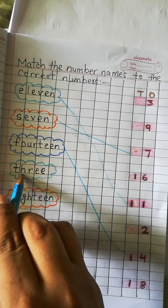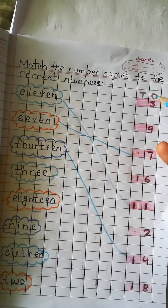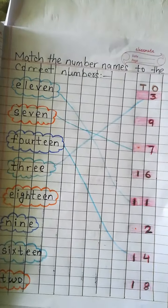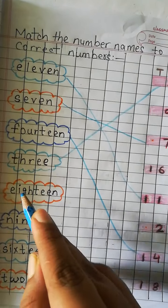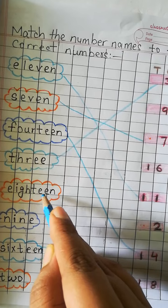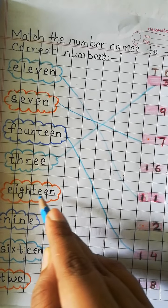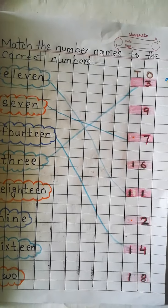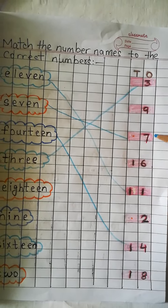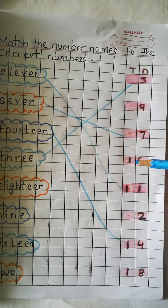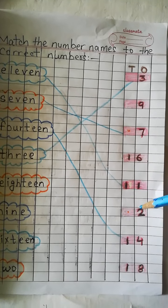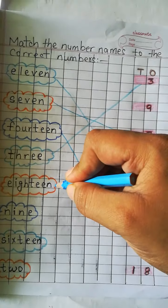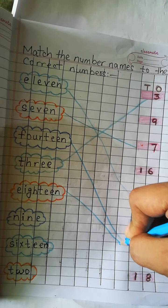Now, THREE — T-H-R-E-E — 3. Let's find 3. That is 3. Let's match. Now, EIGHTEEN — E-I-G-H-T-E-E-N — 18. Let's find number 18. Number 3, number 9, number 7, number 16, number 11, number 2, number 14, and here is 18. Let's match.